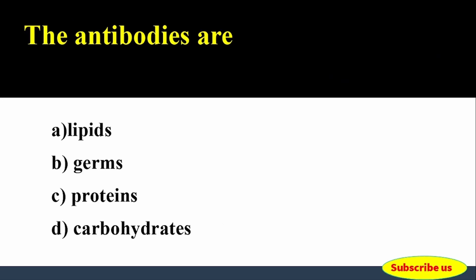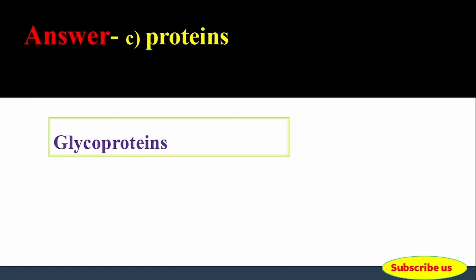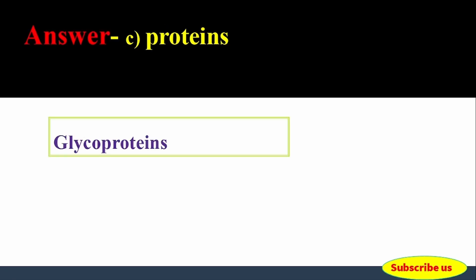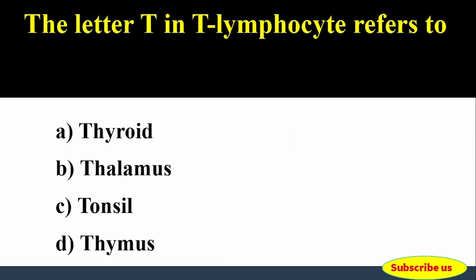Next question: Antibodies are — Options: A) Lipids, B) Germs, C) Proteins, D) Carbohydrates. Answer: Option C, Proteins. The antibodies are proteins; specifically, they are glycoproteins.